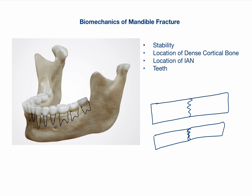After reduction, we fix the fragments. For fixation we need to use a technique that can keep both bone fragments together. One such thing is a mini plate — we use a plate and fix it with screws. When we fix them, the fractured fragments are joined together and even when forces are applied on them they will not be separated.